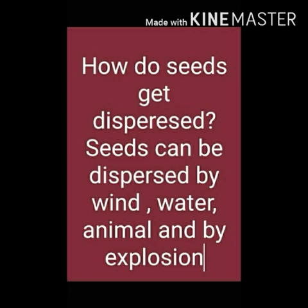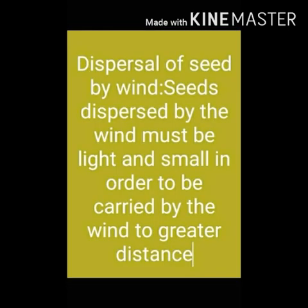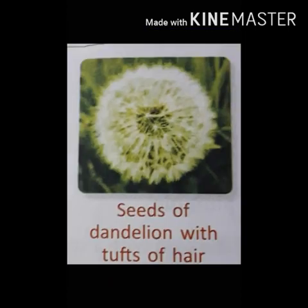Seeds can be dispersed in a number of ways. They may be carried by wind, water, or animals, or scattered by explosion. The first way of dispersal of seed is by wind. Seeds must be light and small in order to be carried by wind to greater distances. The seeds of hyptage, dandelion, madar, and cotton have a tuft or bunch of hair. Sycamore seeds are winged — they spin through the air like mini helicopters.